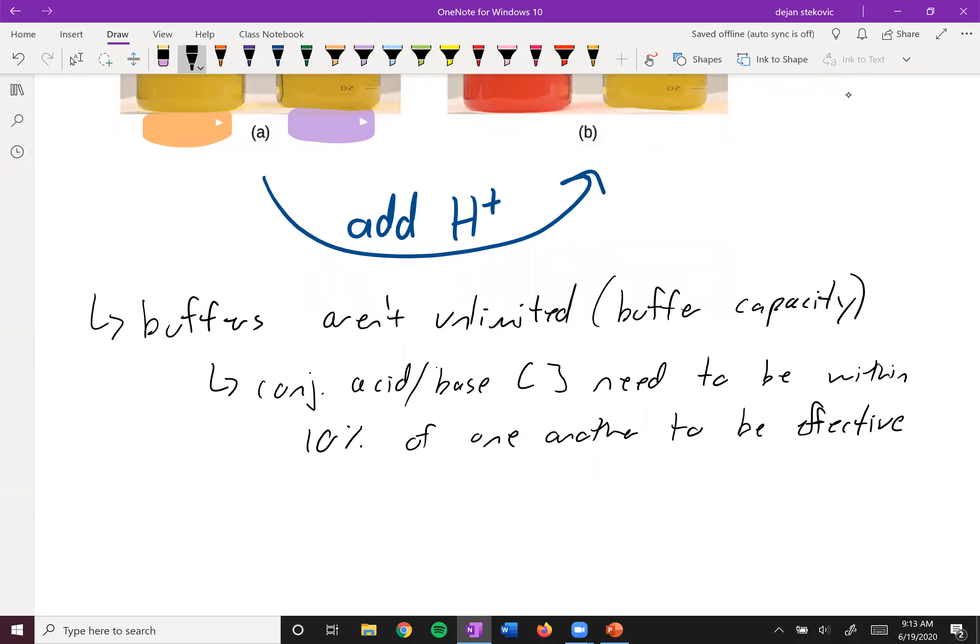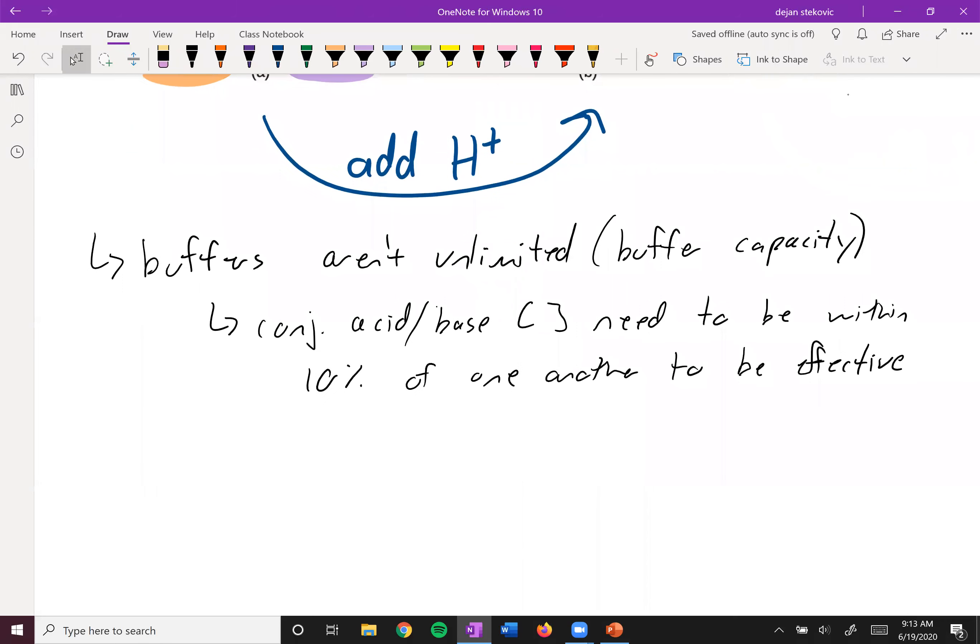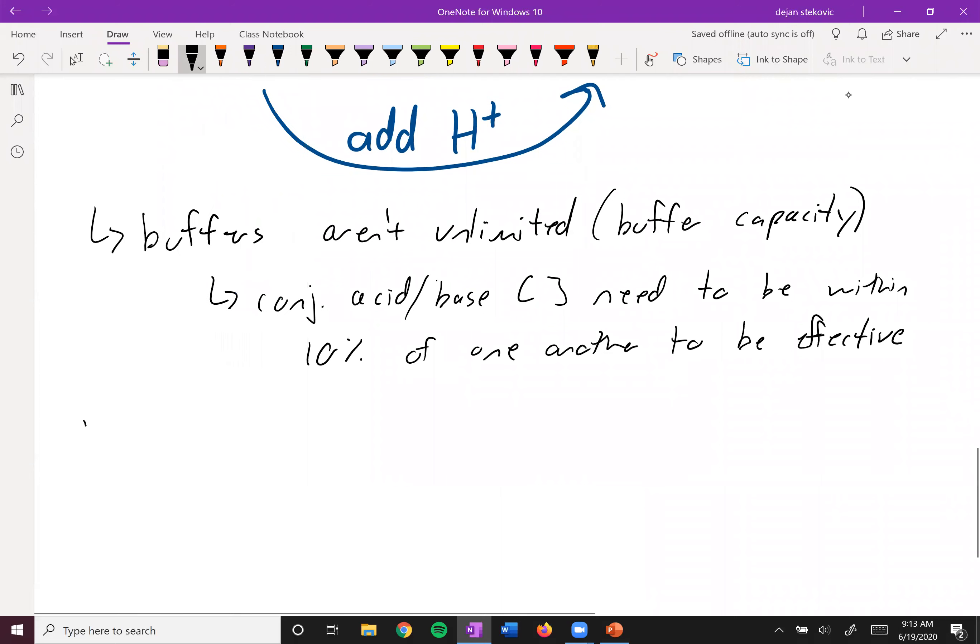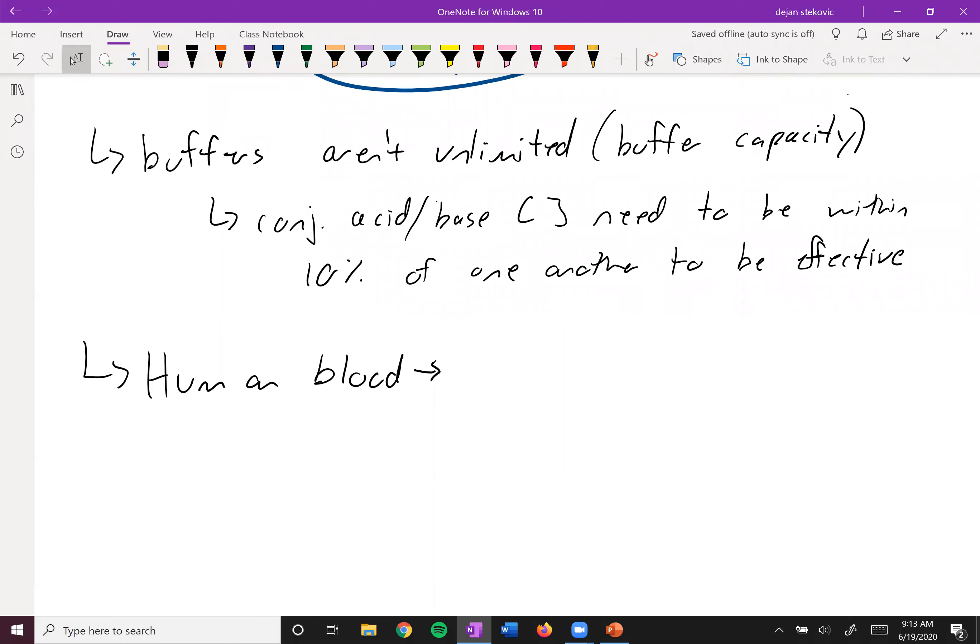Once you have way more of one than the other, you are no longer an effective buffer. For example, in human blood, your blood is buffered, which basically keeps you from dying every time you work out or eat something acidic. The buffer here is bicarbonate and carbonic acid. So that's H2CO3, carbonic acid, and its conjugate base bicarbonate. If you add H+, some of your bicarbonate is going to turn into carbonic acid. And then if you add some hydroxide, some of your carbonic acid is going to turn into bicarbonate.